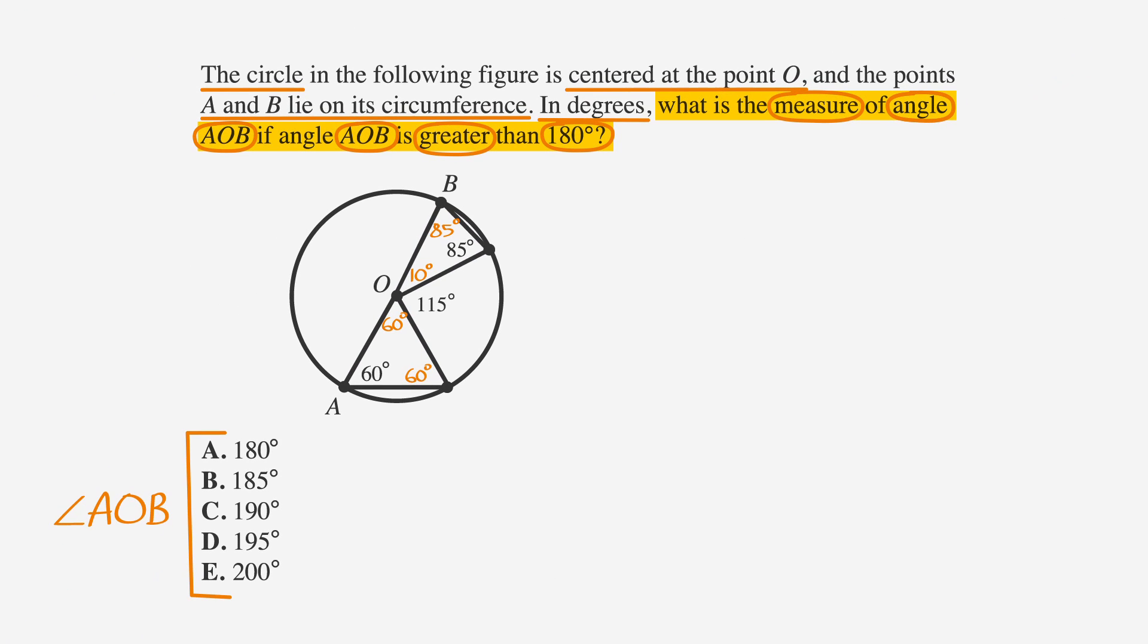Let's return to the question. It asks what is the measure of angle AOB if it's greater than 180. To get our answer, we just add the measure of the angles together to get 10 + 115 + 60 = 185 degrees. Choice B is our answer.